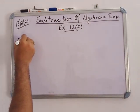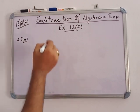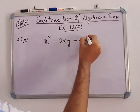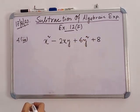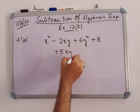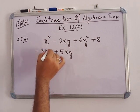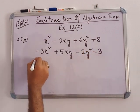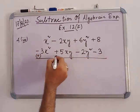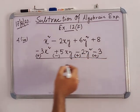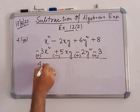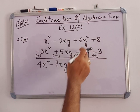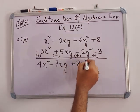Next, problem 4b3: subtract 5xy minus 3x squared minus 2y squared minus 3 from x squared minus 2xy plus 6y squared plus 8. After changing signs: x squared plus 3x squared equals 4x squared; minus 2xy minus 5xy equals minus 7xy; 6y squared plus 2y squared equals 8y squared; and 8 plus 3 equals 11. The answer is 4x squared minus 7xy plus 8y squared plus 11.